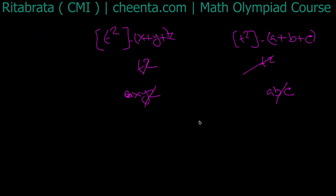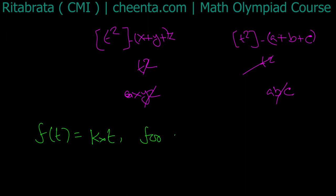So f is a cubic polynomial where the leading term, t² term, and constant term are all cancelled. Only the linear part remains, so f(t) = k·t for some real number k, and this holds for all t in ℝ.